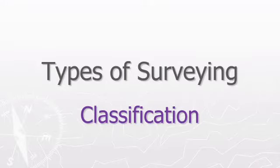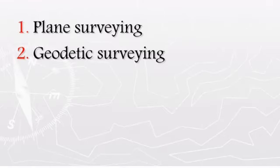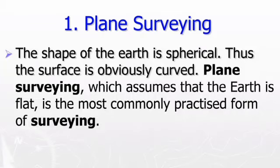There are two main types of surveying: plane surveying and geodetic surveying. In plane surveying, the shape of the earth is spherical and its surface is curved, but plane surveying assumes the earth is flat. It is the most commonly practiced form of surveying.